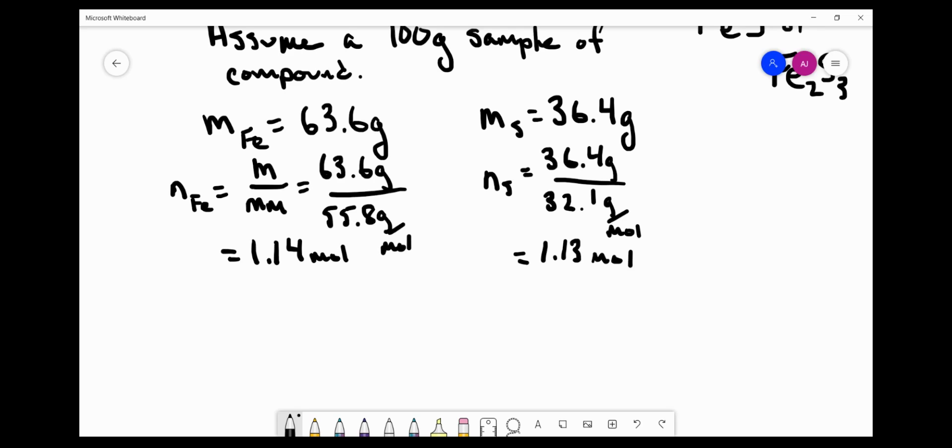If you can't look at the mole numbers here and say this is a one-to-one ratio, what we can do is convert these into whole numbers. And the first step in doing that is to take the smaller of the two values and divide both of the mole values that you have by that number. So 1.13 slightly smaller than 1.14. So I'm going to divide both of them by that same number.